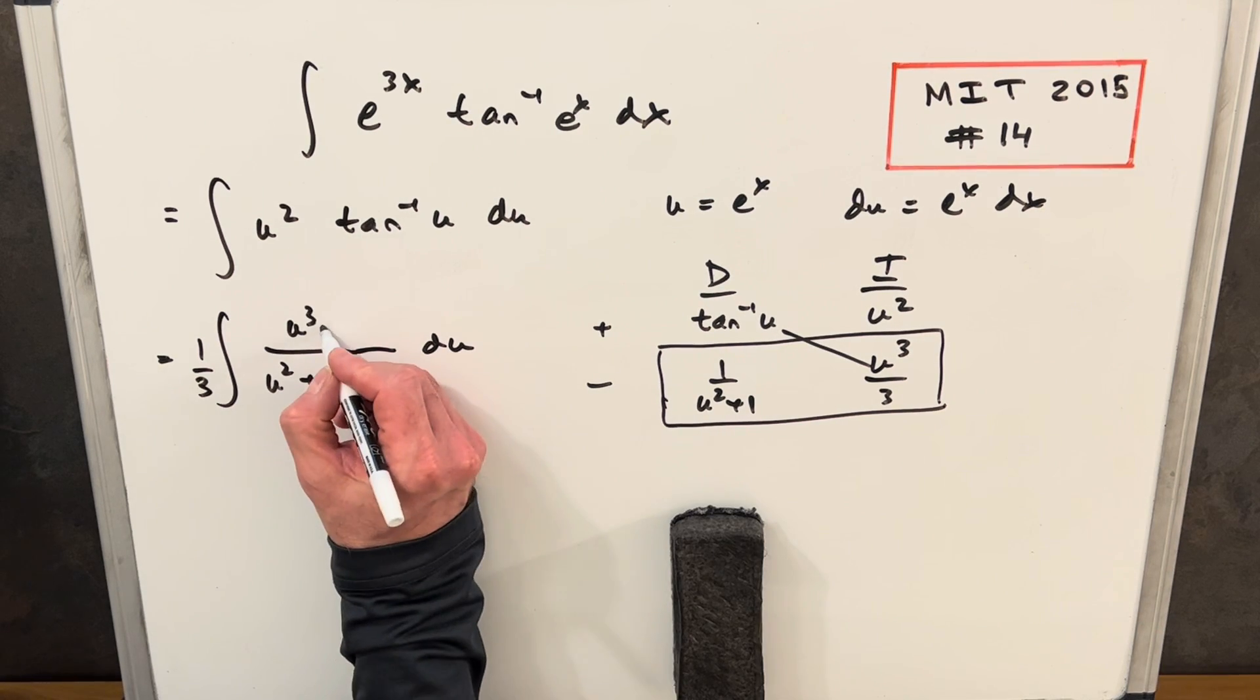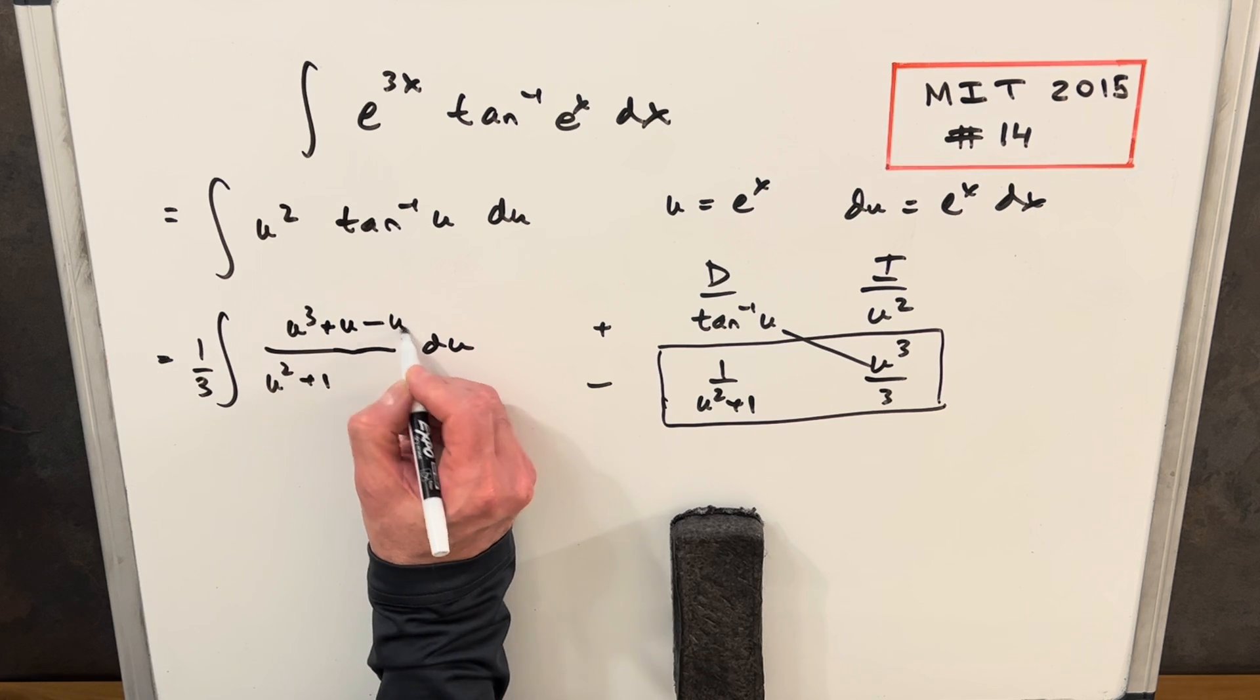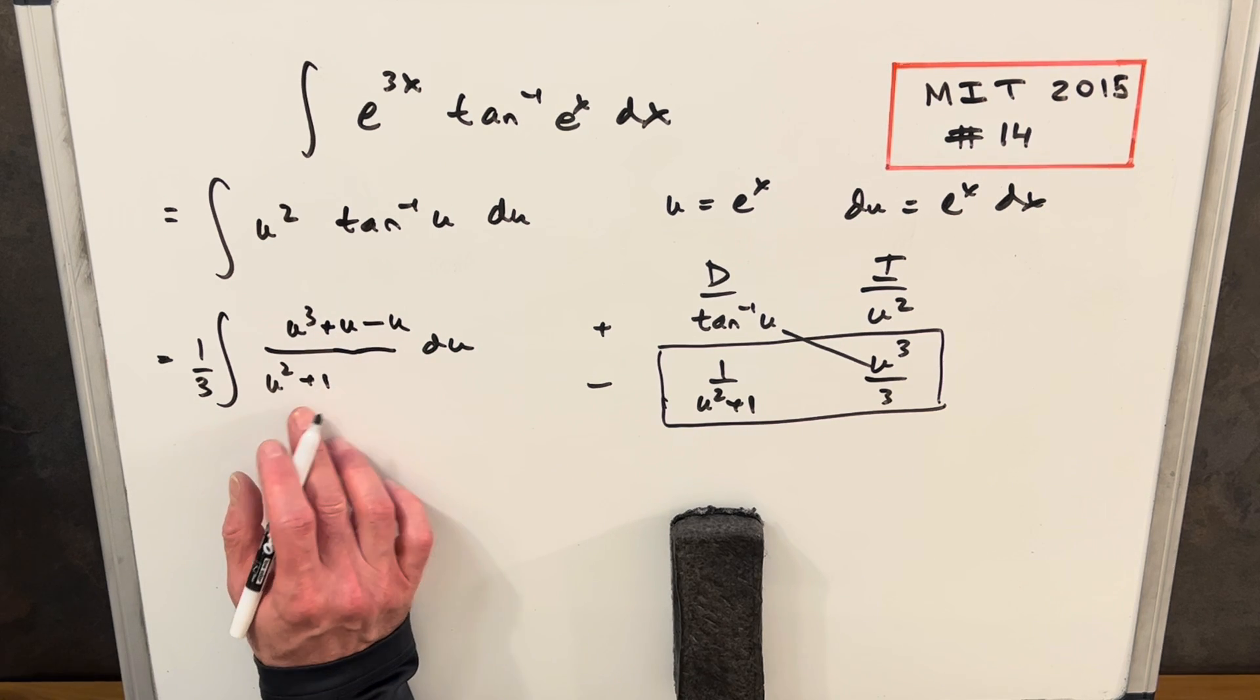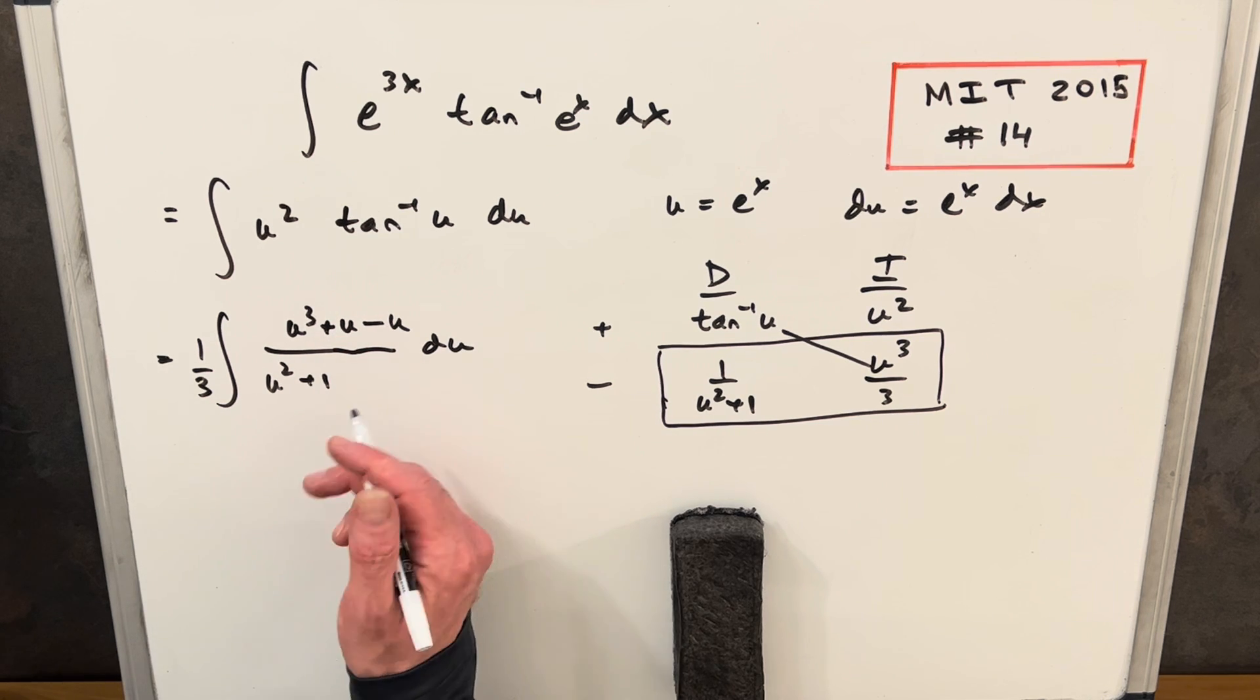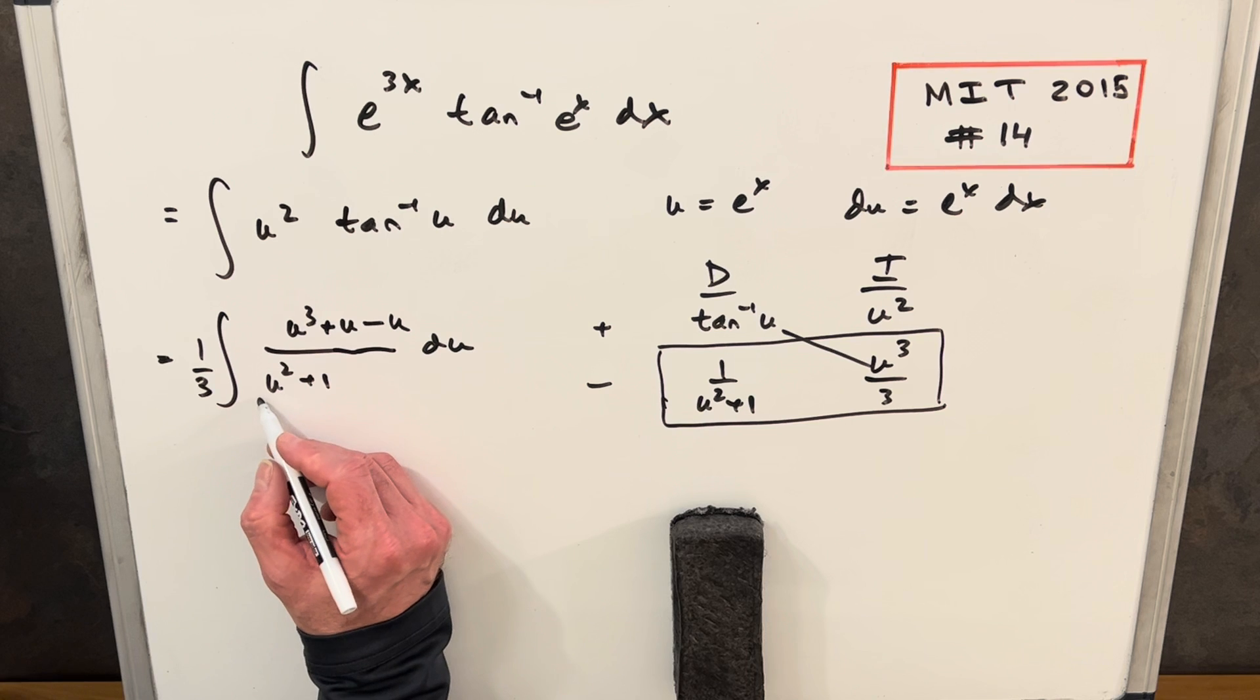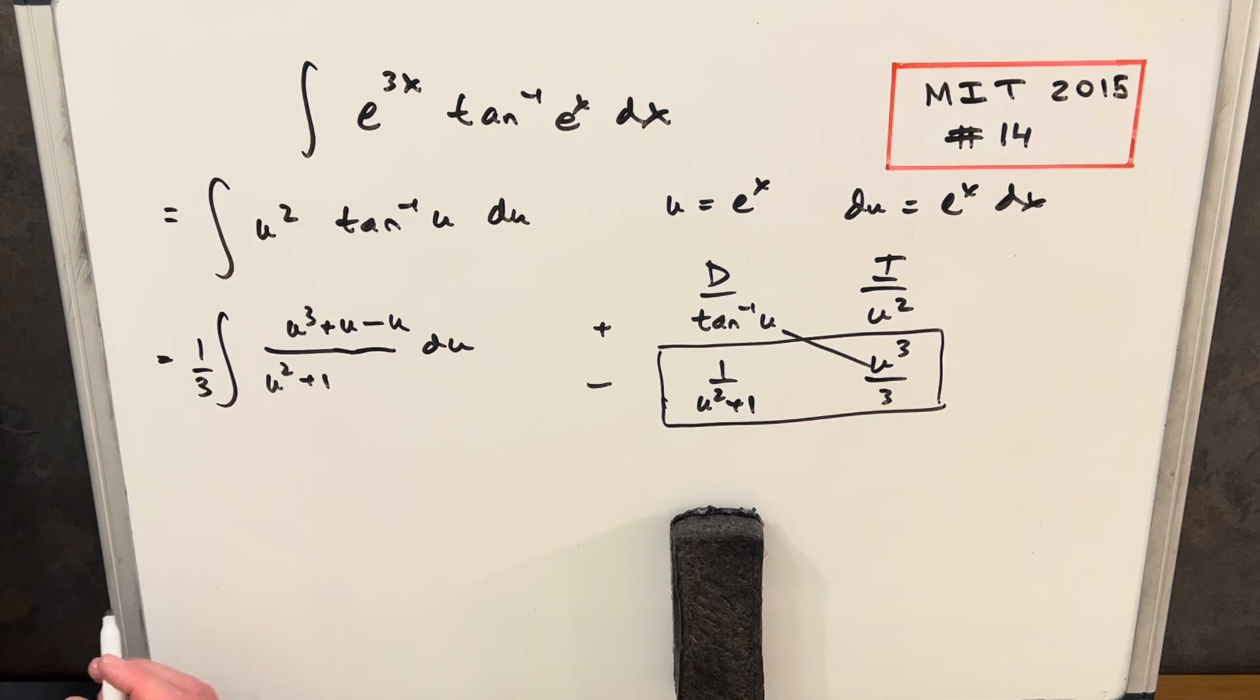What we can do is if we just add a u here, and we also have to subtract a u so we're not changing the expression, but then we'll notice that if we divide u squared plus 1 into u cubed plus u, that's just u. Or if you looked at, like, if you multiplied u times this, you get u cubed plus u.